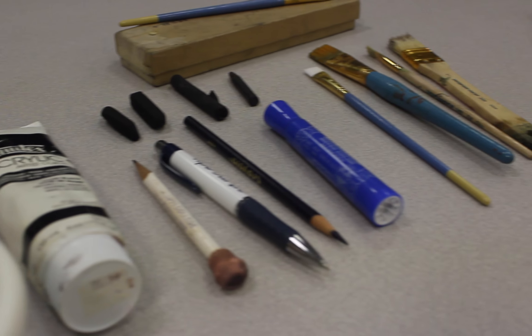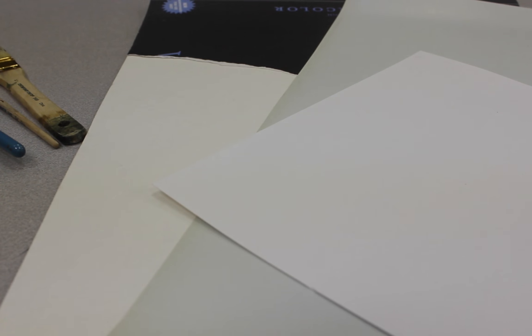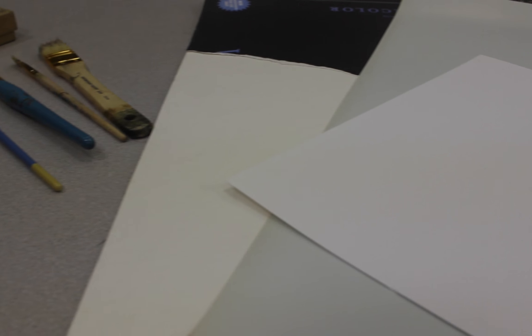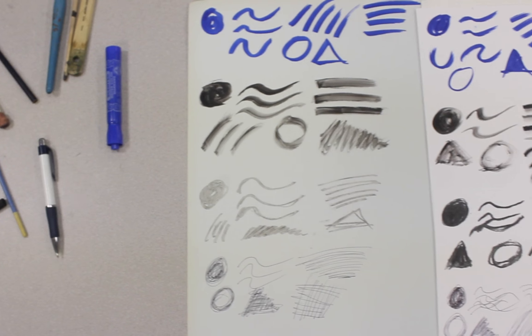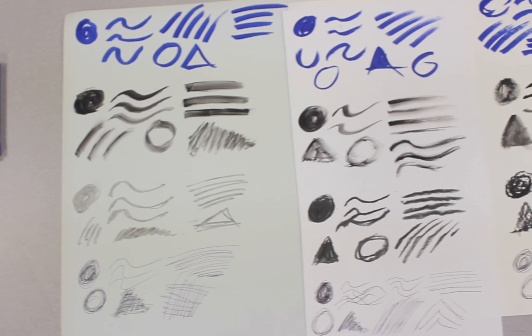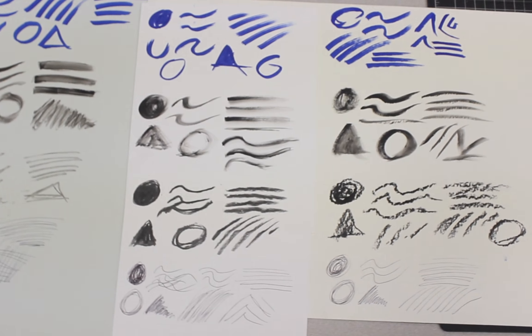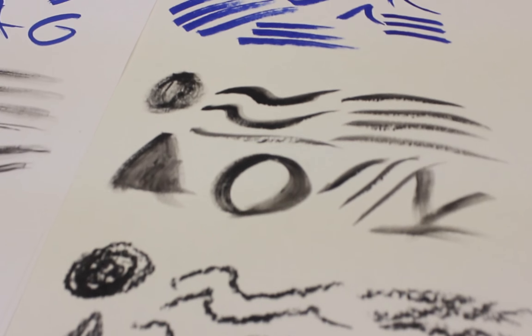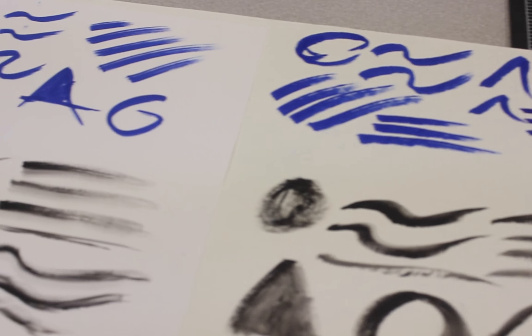The first thing you want to do is test a variety of media. I've got smooth and rough paper, paintbrushes, markers, and pencils. Test each media by drawing some lines and shapes to see how they react to the different surfaces. This should give you a good idea of the details within their texture profile.